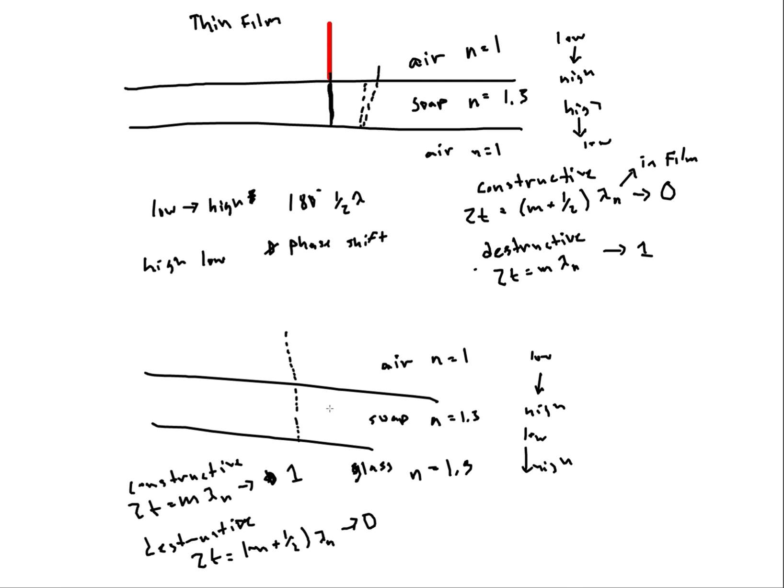And again the extra path distance is 2T. And so with these types of problems they may start you with this film and then add or change one of the mediums, and then you have to realize okay where do I have a shift, where don't I have a shift? Again you'll need to know how to calculate the wavelength inside the film. So if you know these two indices of refraction you can calculate the velocities, and from there you can calculate your wavelength.